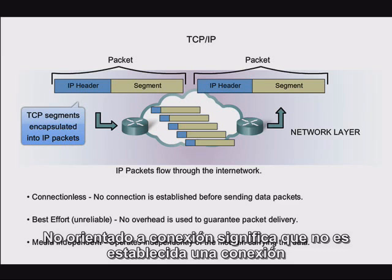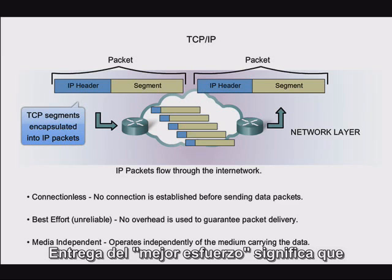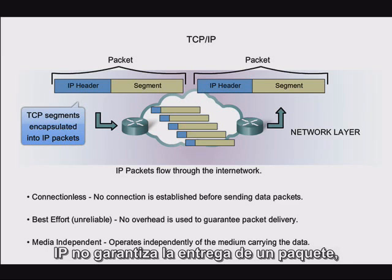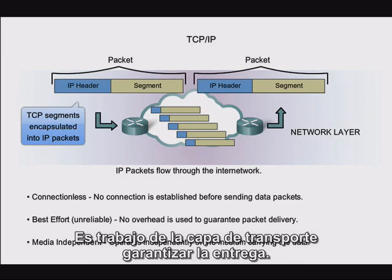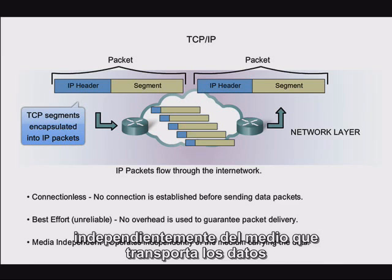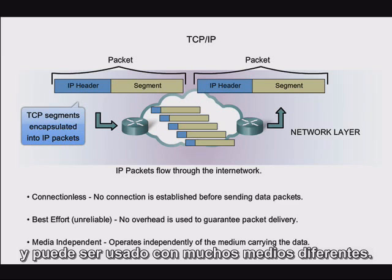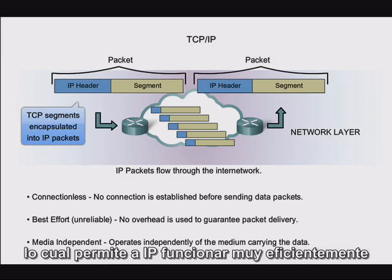Connectionless means that no connection is established between the source and destination before sending data packets. Best effort delivery means that IP does not guarantee packet delivery, so it is possible that a packet may be lost in transmission — it is the job of the transport layer to guarantee delivery. Media independent means that IP operates independently of the medium carrying the data and can be used with many different media. These characteristics greatly reduce the overhead of a packet, which allows IP to function very efficiently at the network layer.